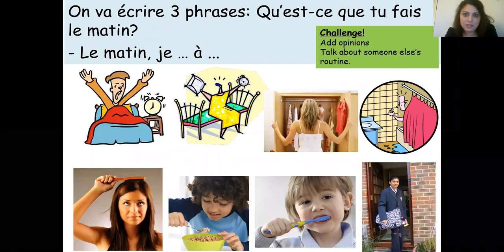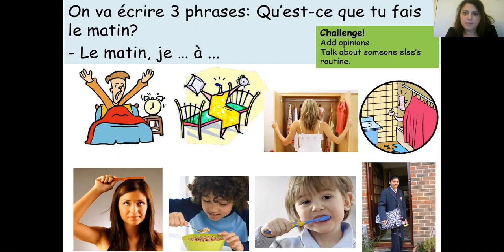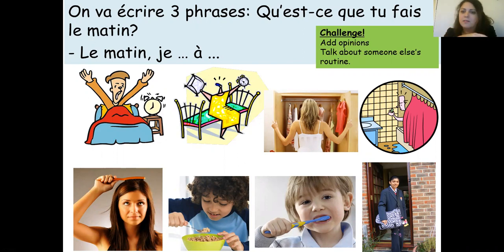Now I would like you to write down at least three sentences about what you do in the morning — 'qu'est-ce que tu fais le matin?' Describe your routine. Start with 'le matin' — in the morning — then add at least three sentences: I wake up at 7:30, I have my breakfast, I leave the house, etc. You can add opinions, or talk about somebody else's routine using a different subject pronoun. Don't forget to add the time and the new reflexive verbs. Pause this video and write your sentences.